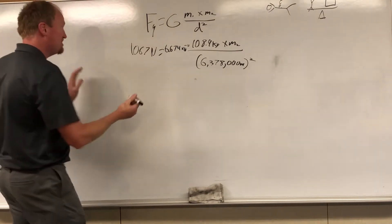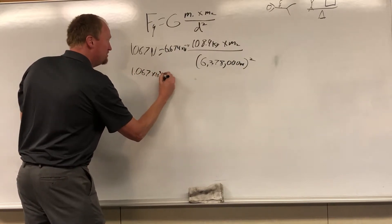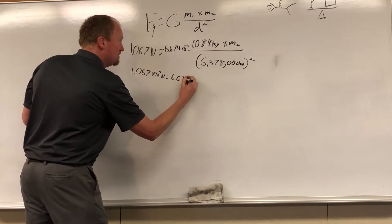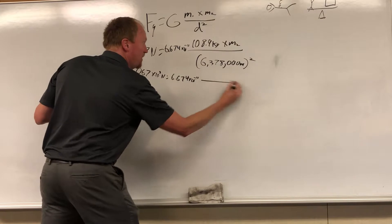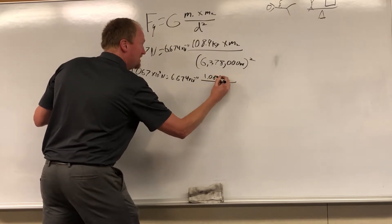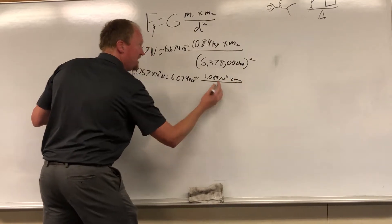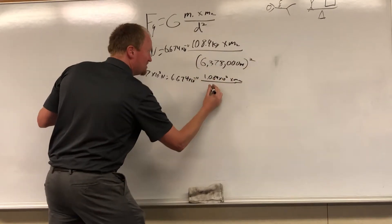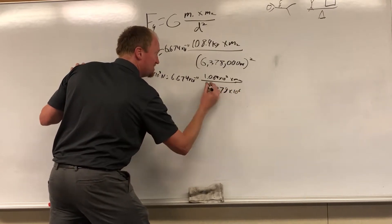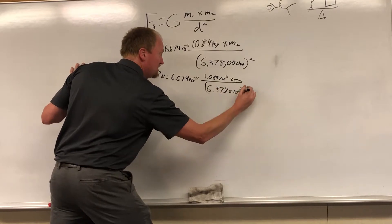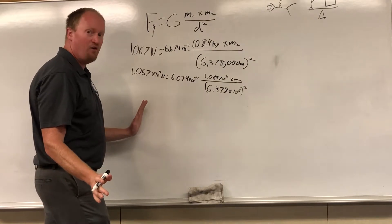Okay, so now, by the way, since the numbers are going to get messy, I want to put everything in scientific notation. 1.067 times 10 to the third newtons, this stays the same, 10 to the negative 11, my mass becomes 1.089 times 10 to the second, m1, mass is what we're trying to find. We're going to make this 6.378 times 10 to the sixth. Scientific notation squared just makes the math easier. A lot of people are afraid of it, just go with it, it'll make your life so much easier.